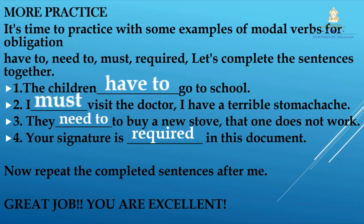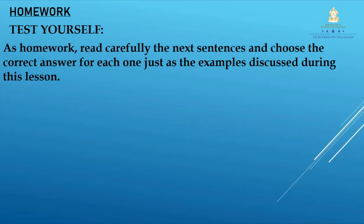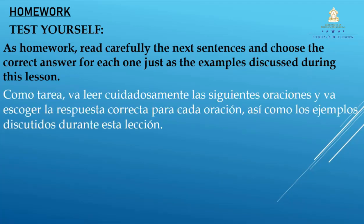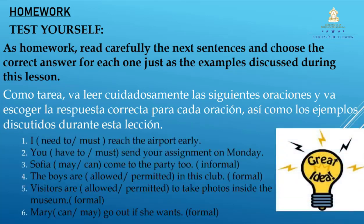Great job, you are excellent! Now it's time for homework. Test yourself. As homework, read carefully the next sentences and choose the correct answer for each one, just as the examples discussed during this lesson. Number one: I (need to / must) reach the airport early. Number two: You (have to / must) send your assignment on Monday. Number three: Sophia (may / can) come to the party too — informal. Number four: The boys are (allowed / permitted) in this club — formal. Number five: Visitors are (allowed / permitted) to take photos inside the museum — formal. Number six: Mary (can / may) go out if she wants — formal.